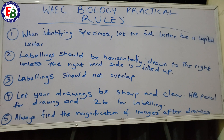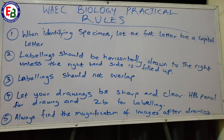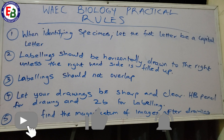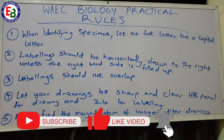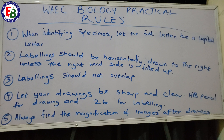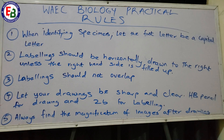Rule number two: labeling should be done horizontally. When you are told to label your specimens, make sure you use a ruler and draw the lines horizontally to the right-hand side of your book, since that is the practical side of your answer booklet.